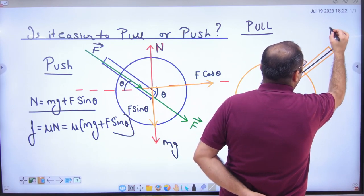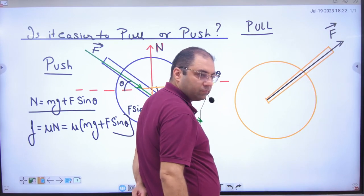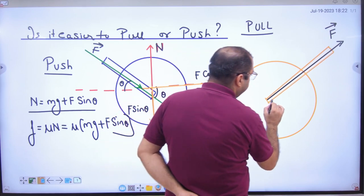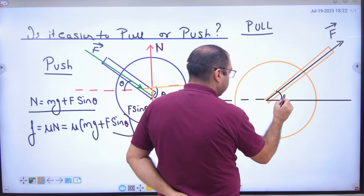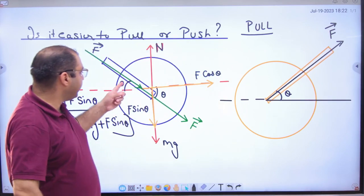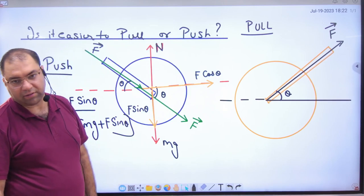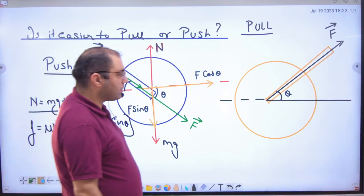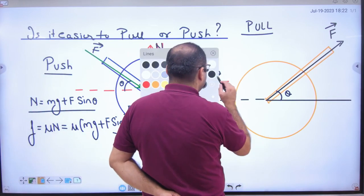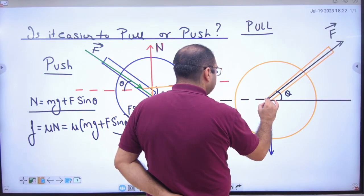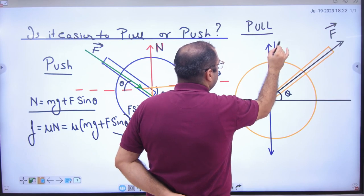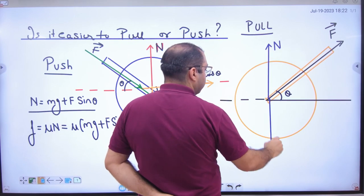So force, it will be like f vector making an angle of theta with x-axis. It has made angle theta with x-axis. The weight will act vertically downwards. So where will normal reaction act? Upwards. So this is weight.